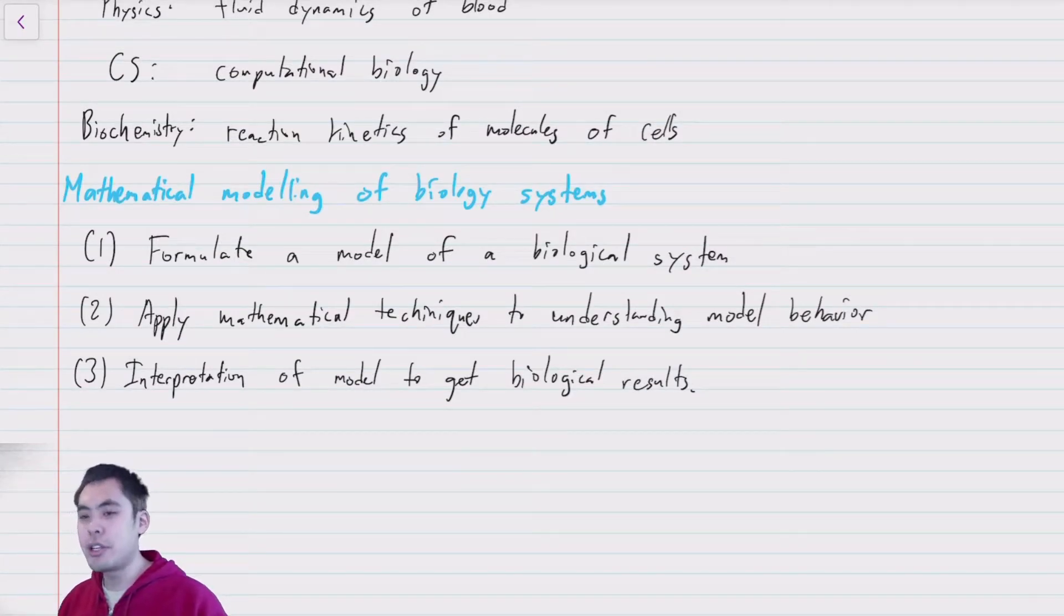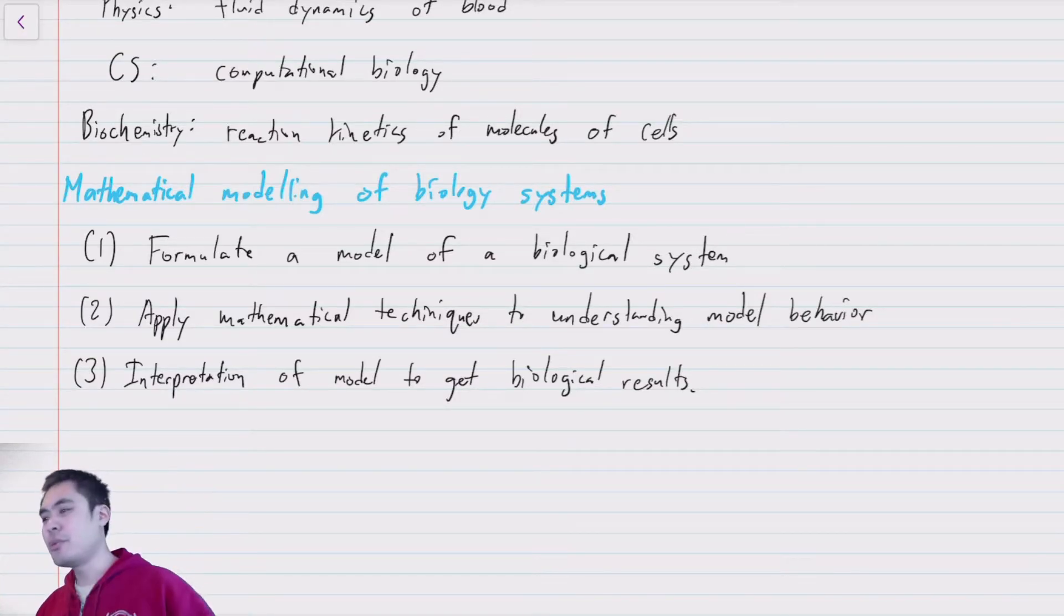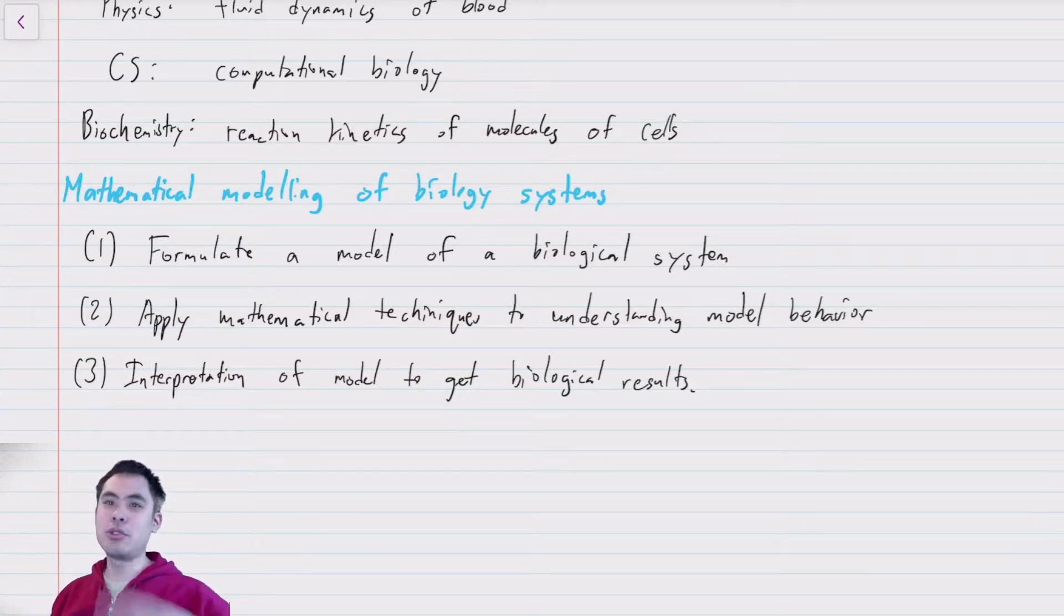So now when we're formulating models, there are a number of different design choices we get to make. So one simple, super stupid model would be to just look at the system and say, our model is that everything remains constant forever. This is a model. It's not a very useful model, but it is a model and it can make predictions. But unfortunately, when you interpret that model's behavior, it turns out not to match the biological system itself.